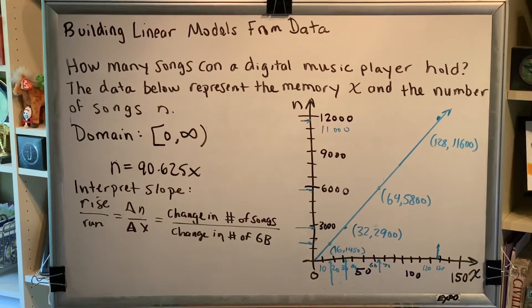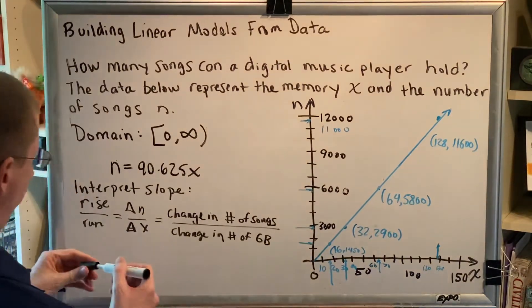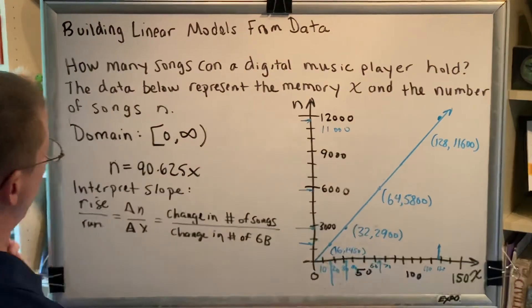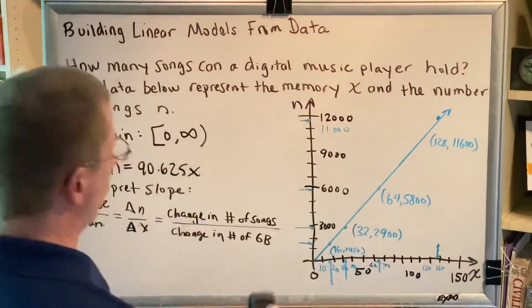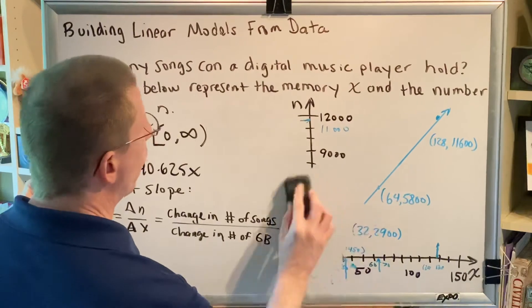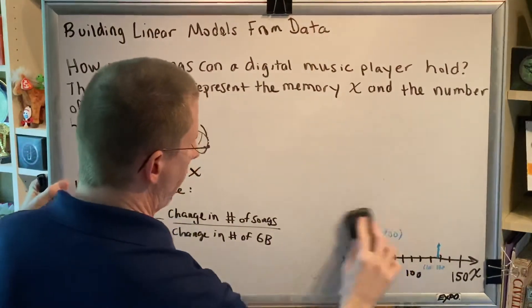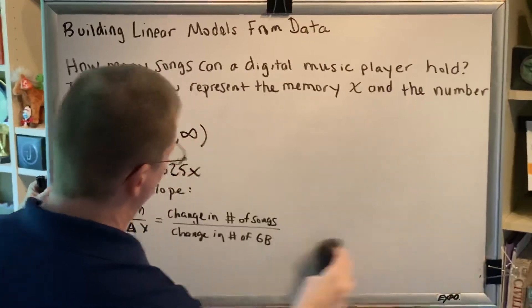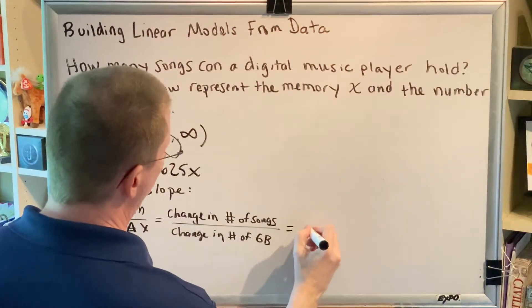And we know that the slope, which is a value that we computed previously, is this number 90.625. So I kind of ran out of room here. I would like very much to be able to write equals 90.625. I guess this is the last part of the problem, so I'll just go ahead and erase the graph here. We've already done everything we need to do with that graph. So this equals 90.625.